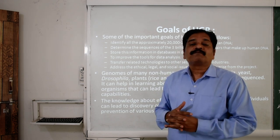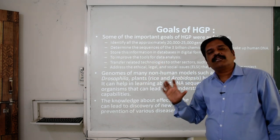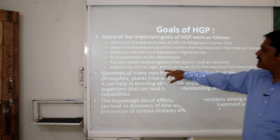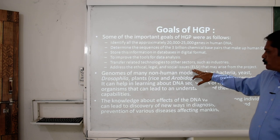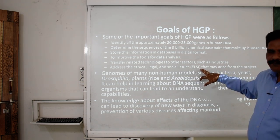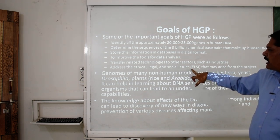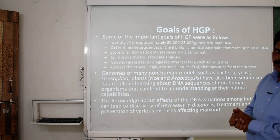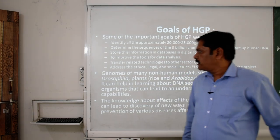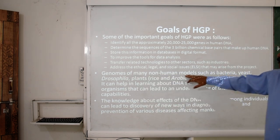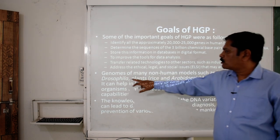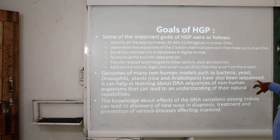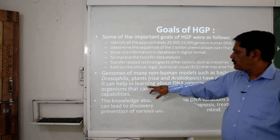Information must also be provided to forensic sciences and other fields that need it. Another goal is to address the ethical, legal and social issues — called ELSI — that may arise from the project. The genome of many non-human models such as bacteria, yeast, Drosophila, and plants like rice and Arabidopsis have also been sequenced to help understand DNA sequences of non-human organisms and their natural capabilities.